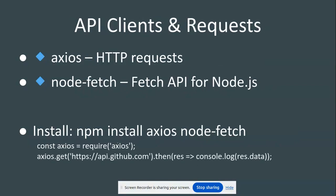Now we have API clients and HTTP requests. The most important library for HTTP requests is Axios, a popular library. You can also use node-fetch, which brings the fetch API to Node.js. You can use either of them.